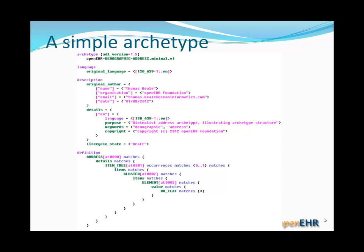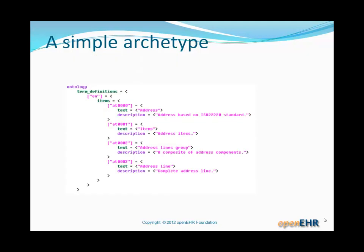You can see here that the definition starts off with 'address', and that corresponds to a class called address. If you look at the ID at the top, you might guess that it's a class called address within a demographic model or package published by OpenAHR — which is exactly what it is. Lastly, the ontology section — named that way because the intention is to connect to ontology and terminology resources. It defines local terms for use within the archetype and provides a place where bindings to external ontologies and terminologies are made.